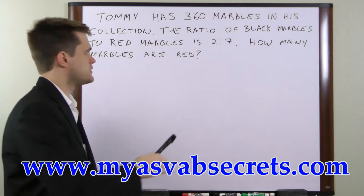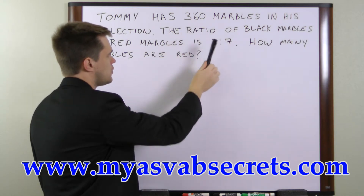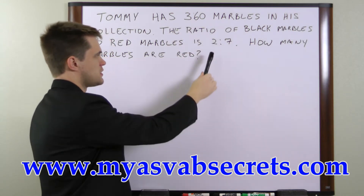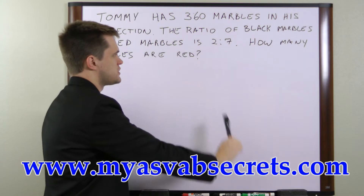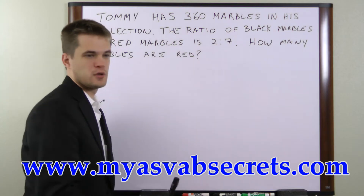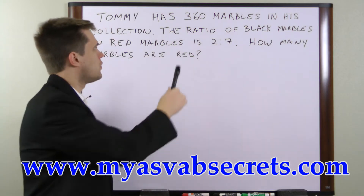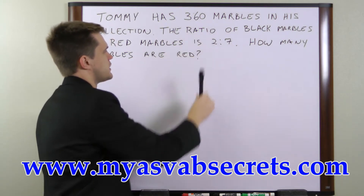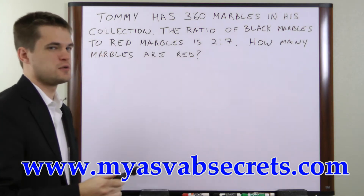The way we do that in a situation where we're given the whole and the ratio is we add the two numbers of the ratio together and then divide the whole by the sum of the two ratio numbers. So let's do that.